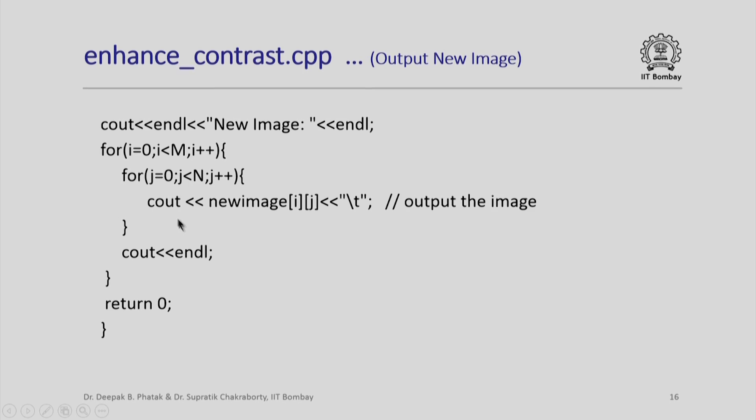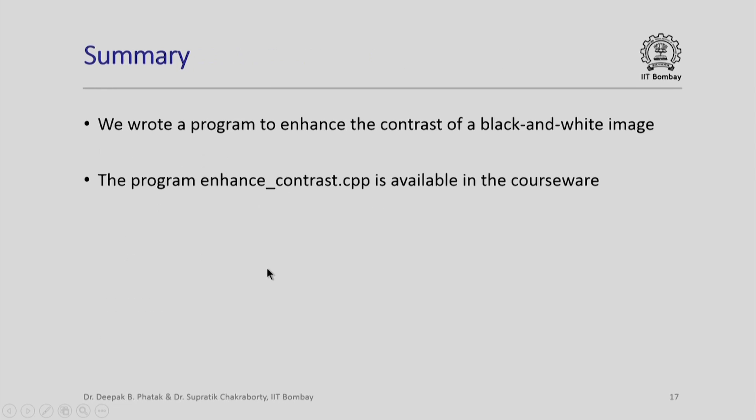Finally, I produce an output. Notice that here again, I am using backslash t to separate out values by a tab character. Notice that after printing every row there is an end of line, so that I will get a decent printout. You will see that this program will calculate the enhancement of contrast operation and the new image that we get.